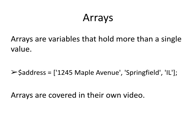The last of our data types are arrays. Arrays are variables that hold more than a single value. In the example provided, the variable address has been assigned an array that consists of three values: the actual street address, the city name, and the state postal code — three values being stored into a single variable. Arrays are quite involved and are covered in their own video.